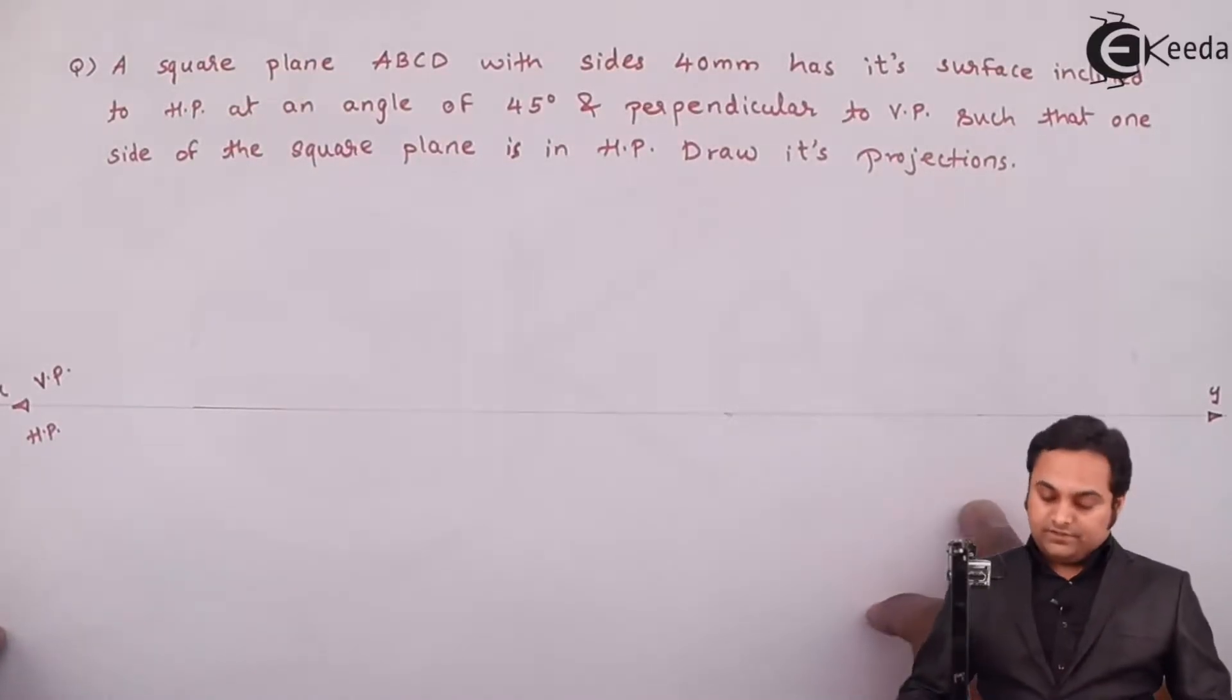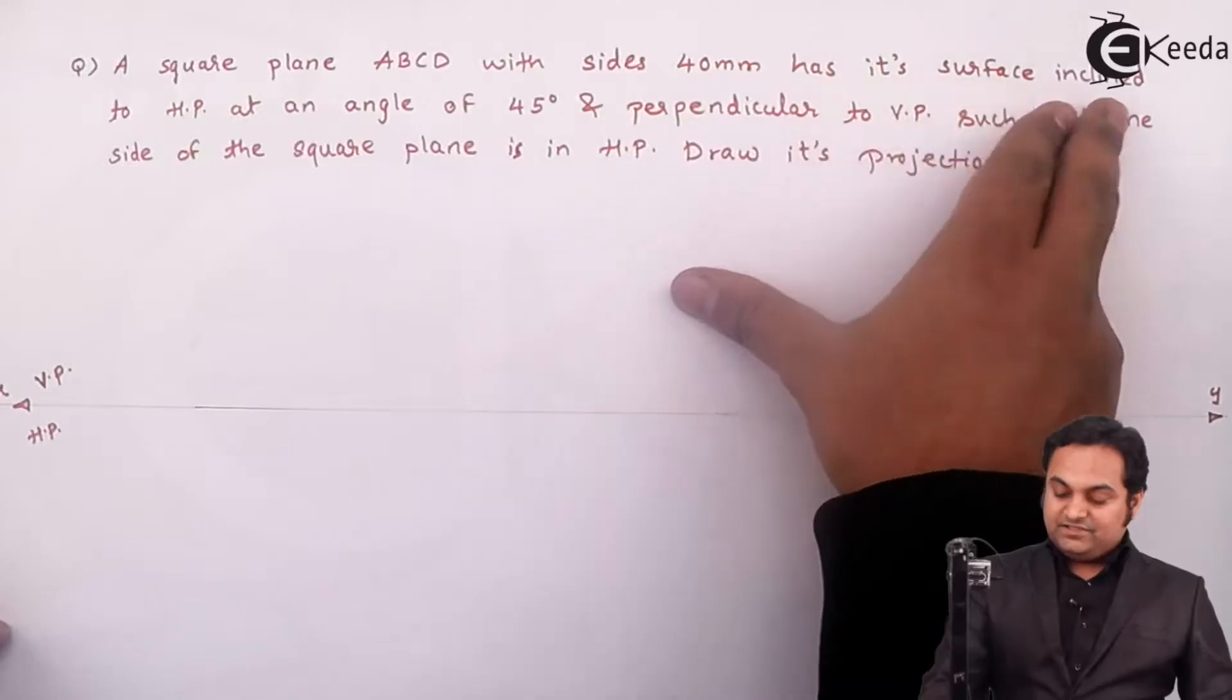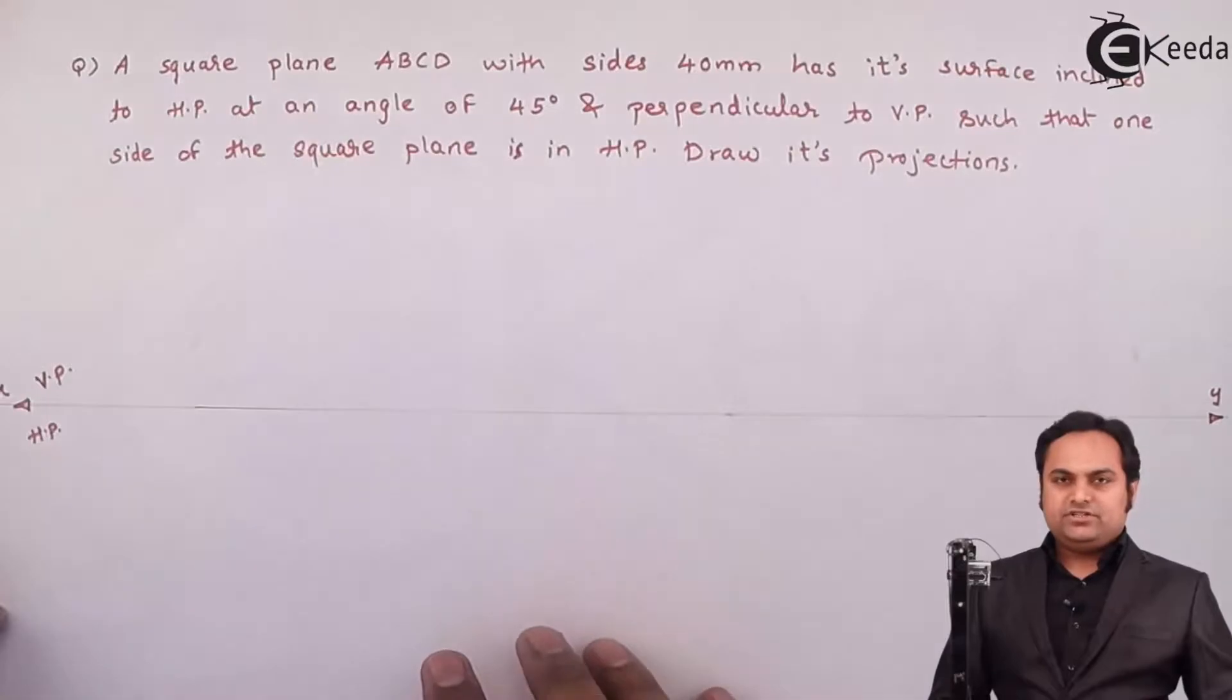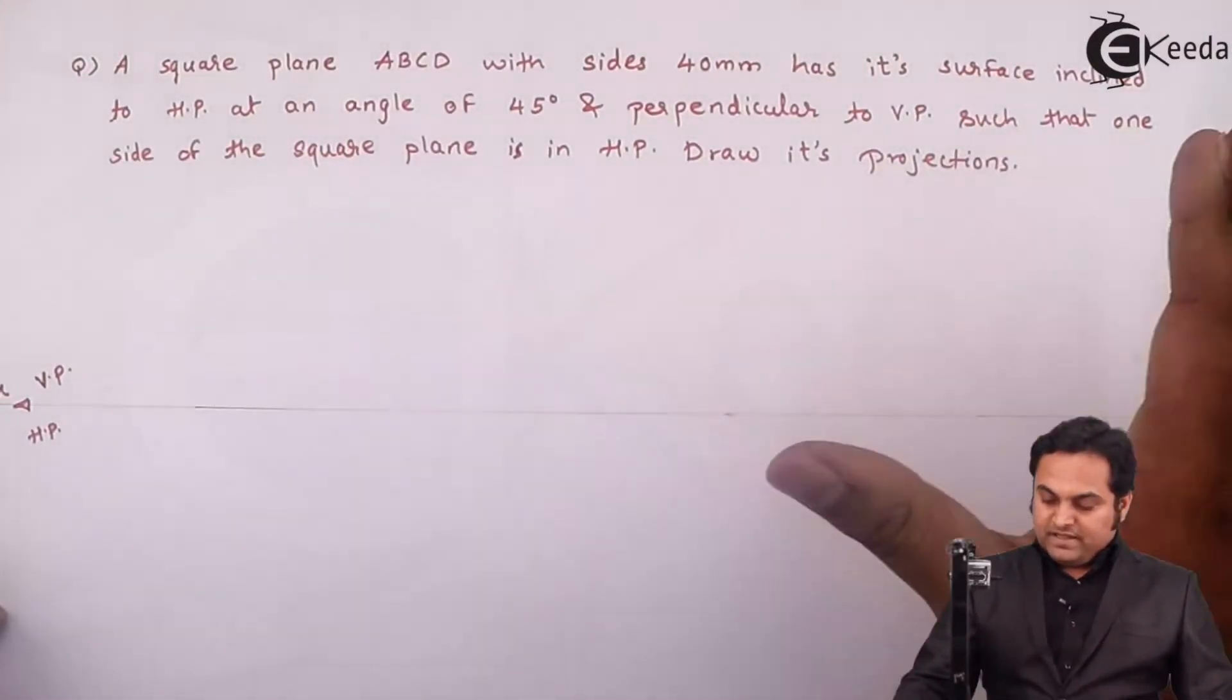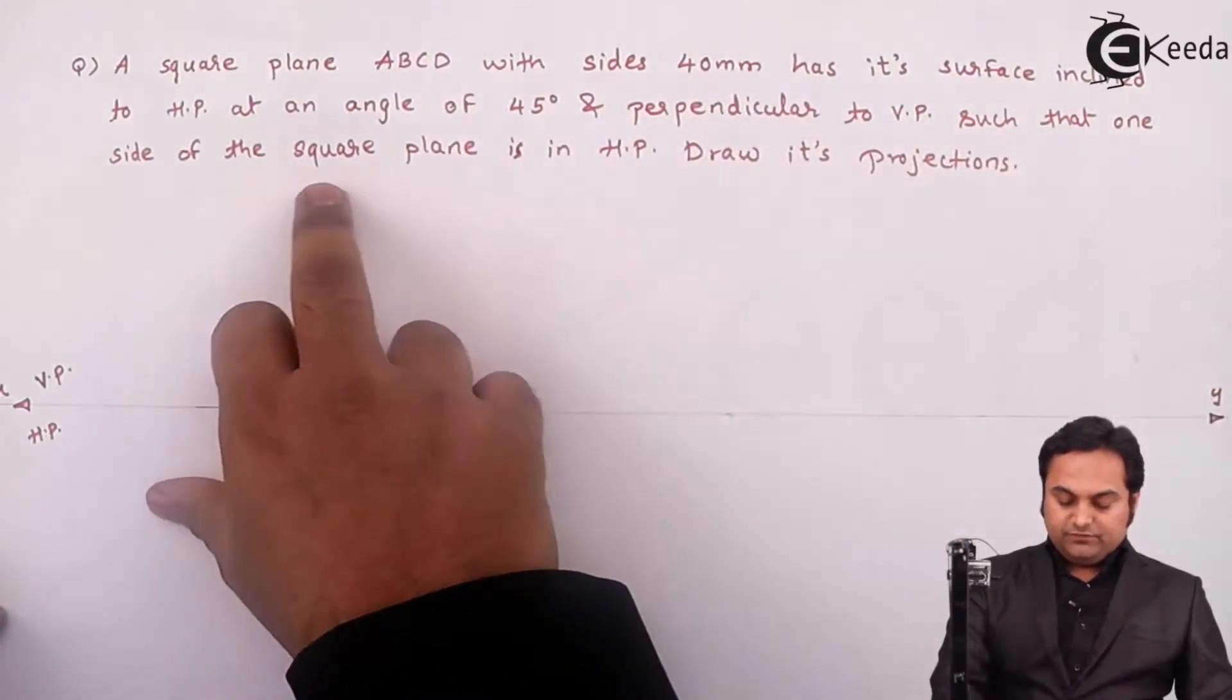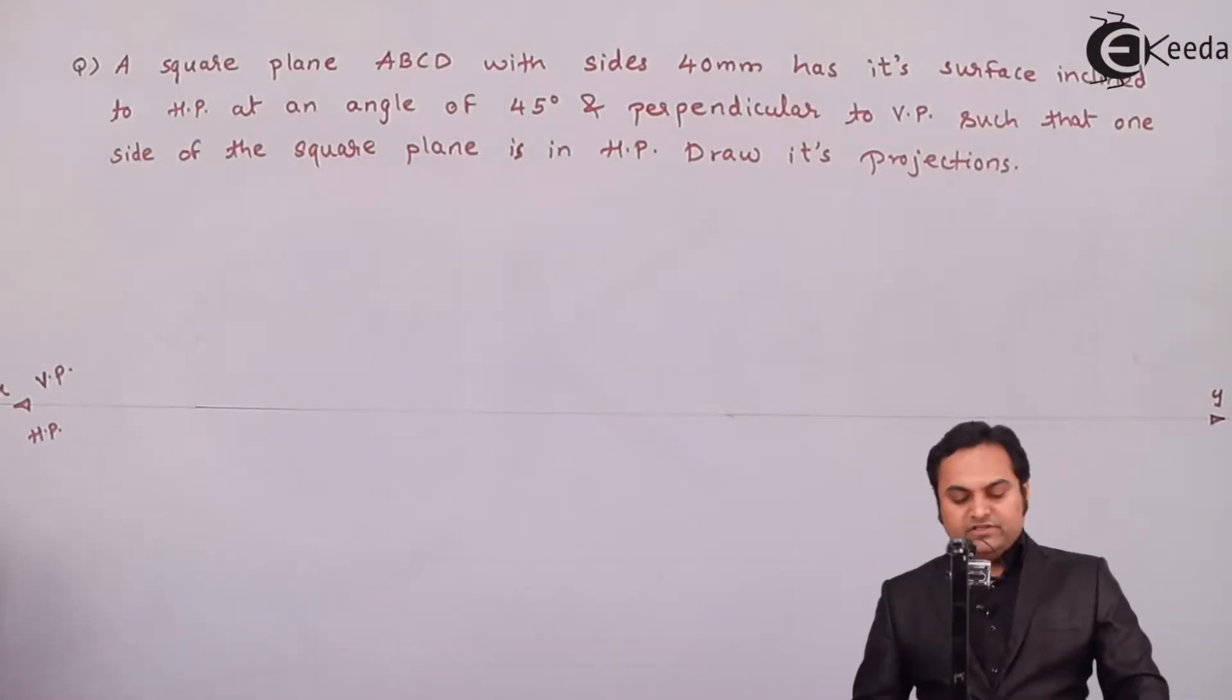It is given that square plane ABCD with sides 40mm has its surface inclined to HP at an angle of 45 degrees. So inclination with HP will be seen in VP, and it is given perpendicular to VP such that one of the sides of the square plane is in HP.